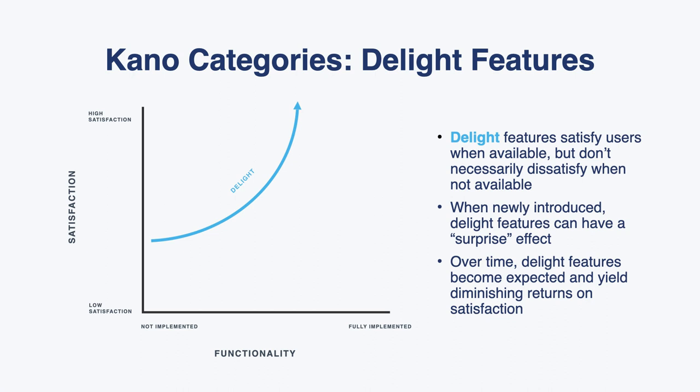The next category is delight features. These differ from performance features in that when available they bring satisfaction, but when absent they don't necessarily dissatisfy. This is what's often called 'surprise and delight.' When a novel feature is introduced it has a very surprising effect — think back to when the iPhone was first introduced, everyone was wowed by the touch screen. But would anyone buy a smartphone without a touch screen now? Probably not. As time goes on, expectations shift.